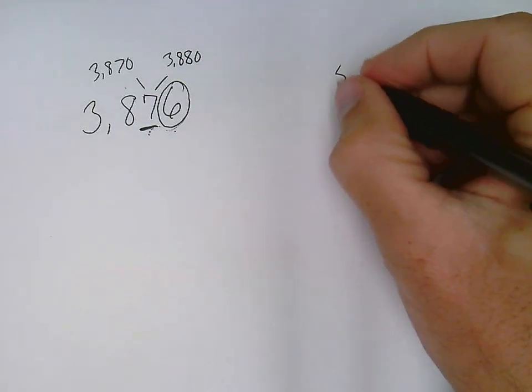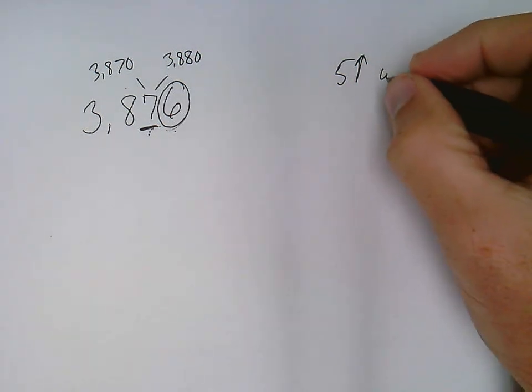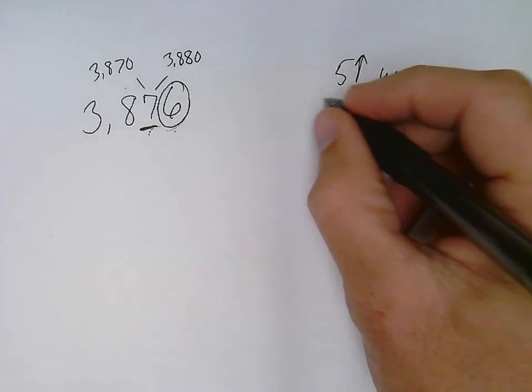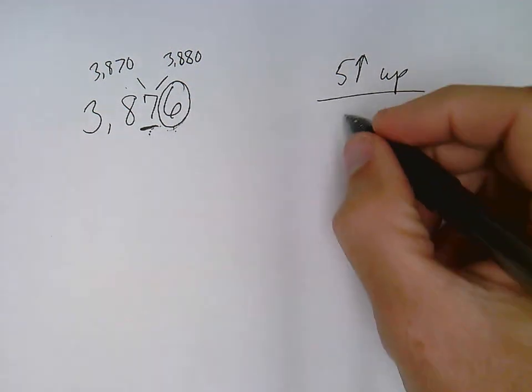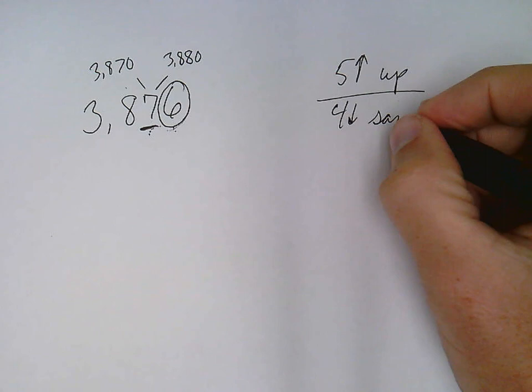If my circle digit is a five or higher, then my underlined digit goes up. If my circle digit is a four or lower, my underlined digit stays the same.